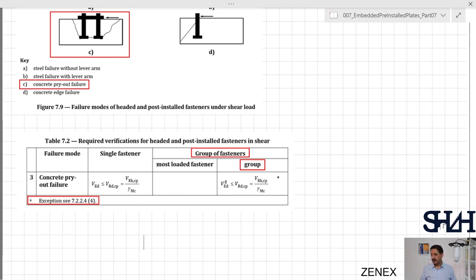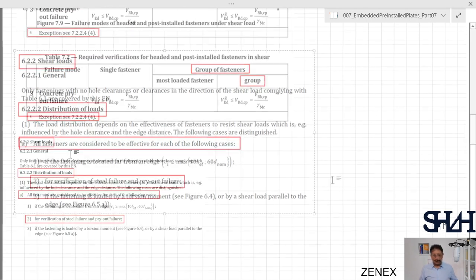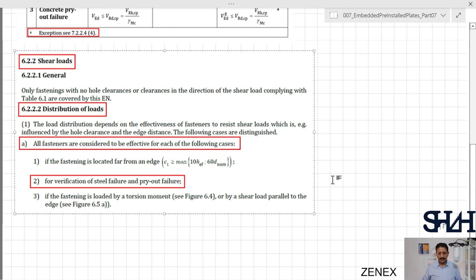Before we go through the verification clause, let's recall shear loads distribution in clause 6.2.2.2. All fasteners are considered to be effective, and in item 2 we can see that for verification of steel failure and pry-out failure, we need to consider all the fasteners to be part of taking the shear force.